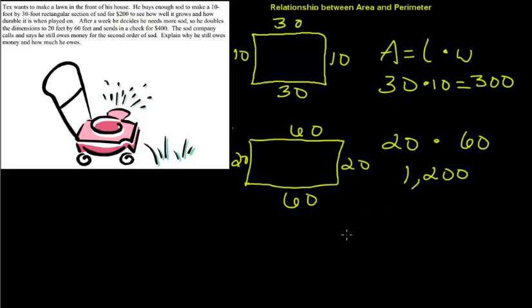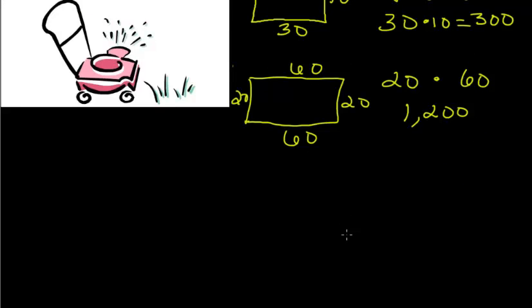So we can use a proportion problem. We can set up a proportion with our original rectangle, which was the area represented by 300 square feet, and the cost from the original problem was $200. That's going to be equal to the new area of the piece of grass, which is 1,200 square feet. And we don't know the cost of the piece of grass for the new dimensions, so we can just represent that with x.